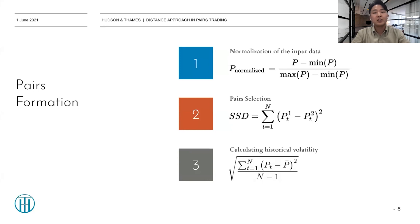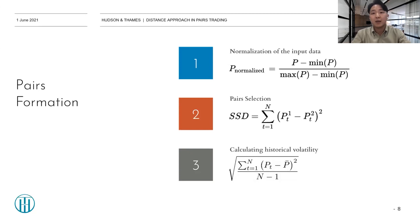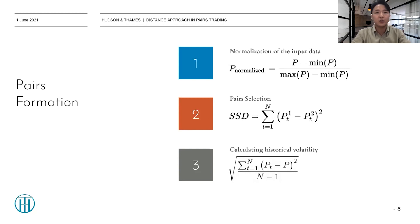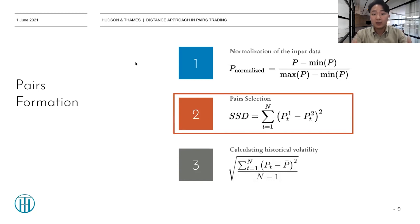In the first step, we normalize the input data using min-max normalization, as all the stocks have different scales of price series. In order to compare the price movements in the next steps — pair selection and calculating historical volatility — we have to set the different scales to the same. The reason we calculate the historical volatility in the pairs formation period is that it is needed in the trading period when we set a threshold for signal generation. So let's see the second step, pair selection, more deeply.